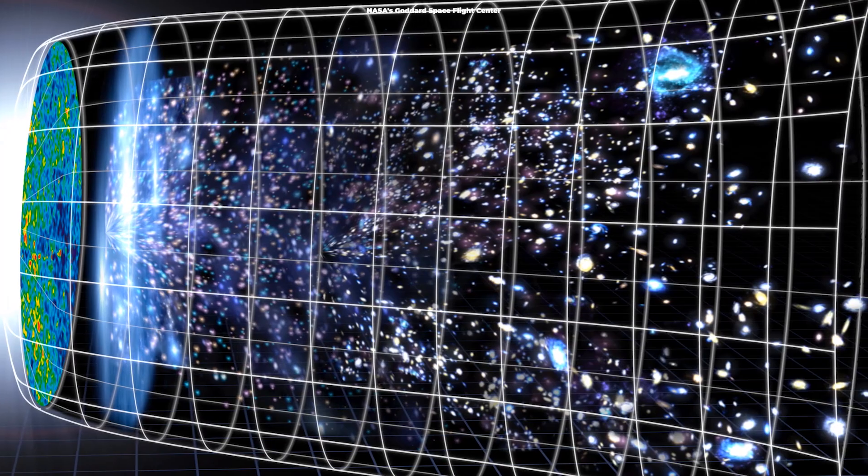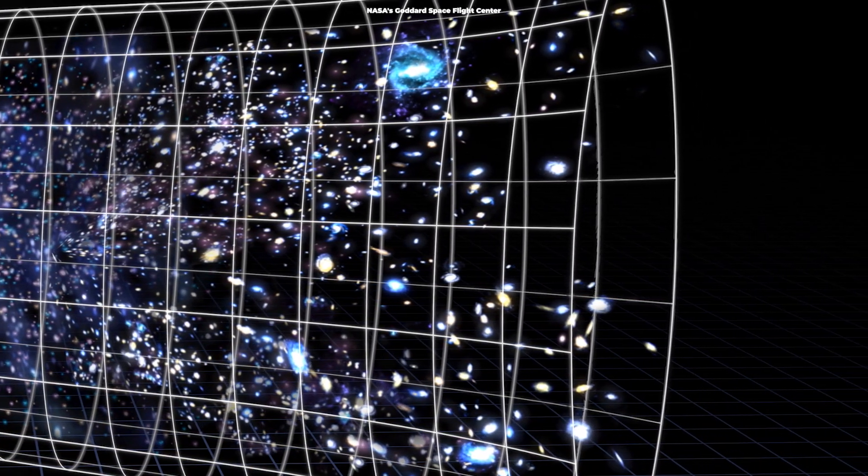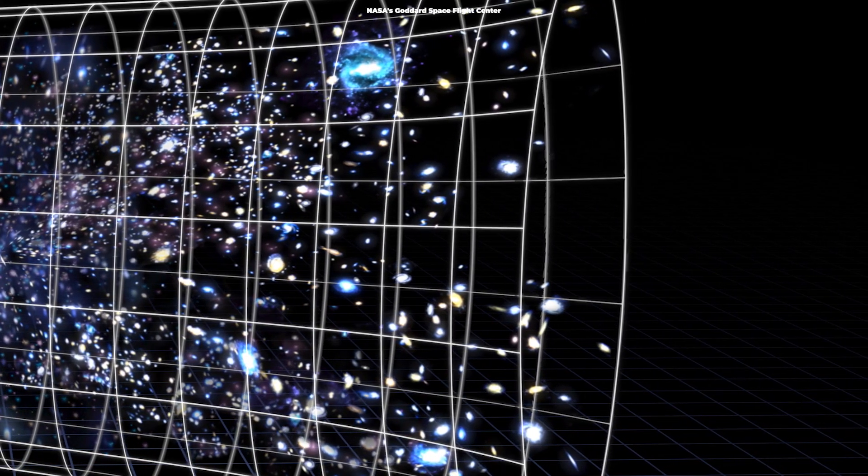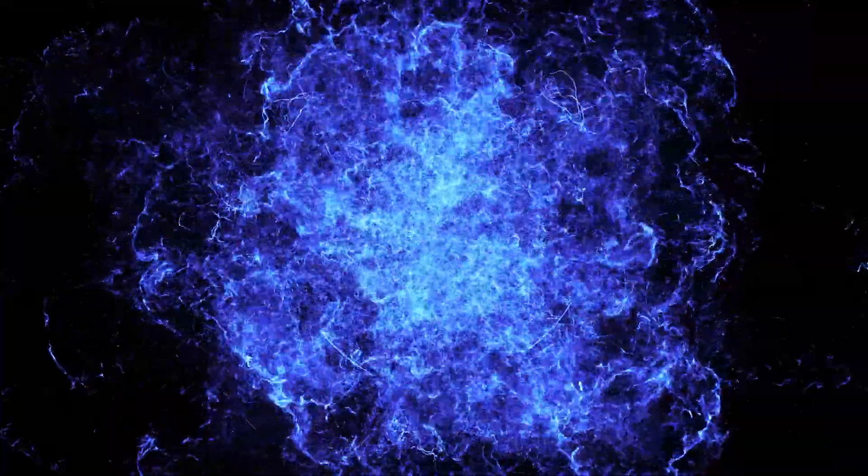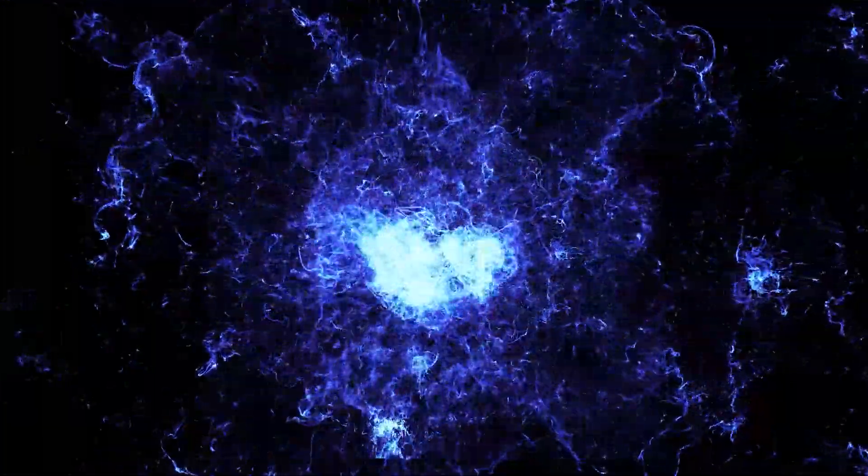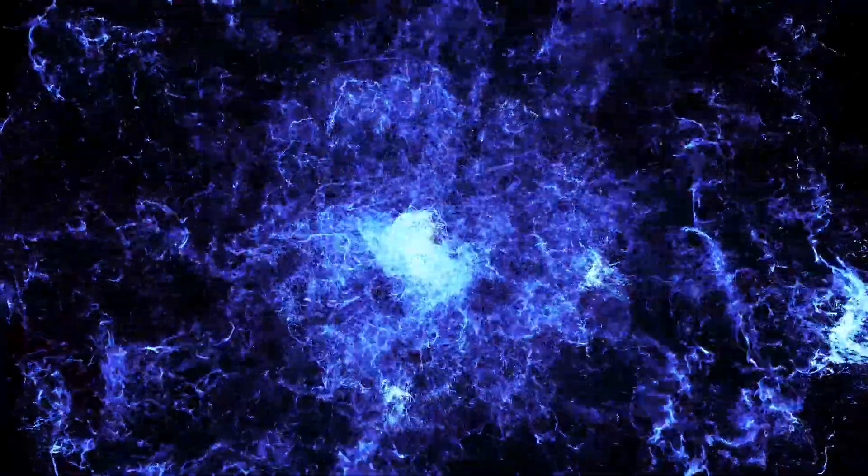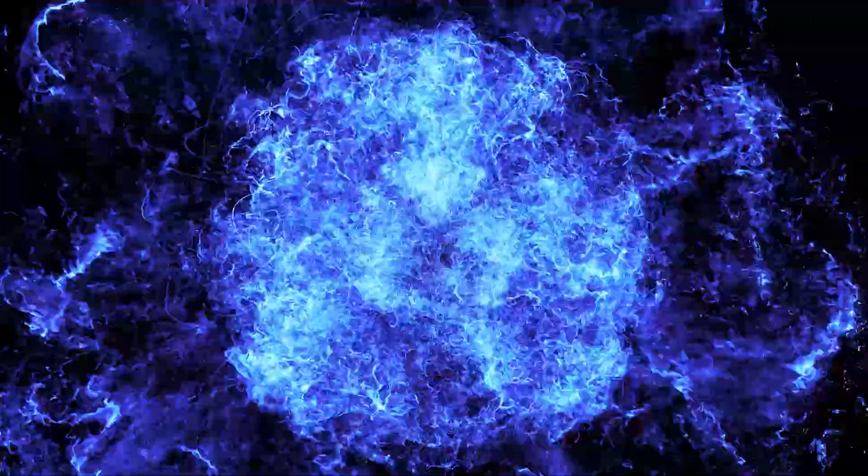As the universe expands and accelerates, it cools and gets darker and darker. Matter as we understand it will likely come to an end. At the end of the Degenerate Era, white dwarfs, black dwarfs, and neutron stars die through a process known as proton decay. That's when the subatomic particles they're made of simply fall apart.